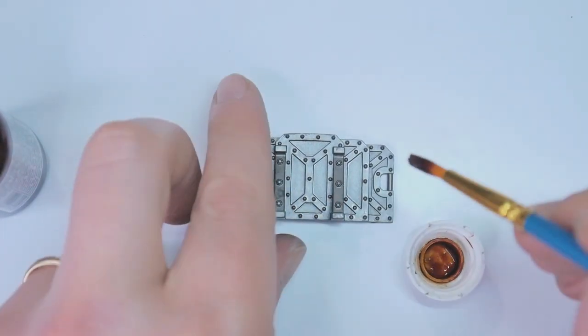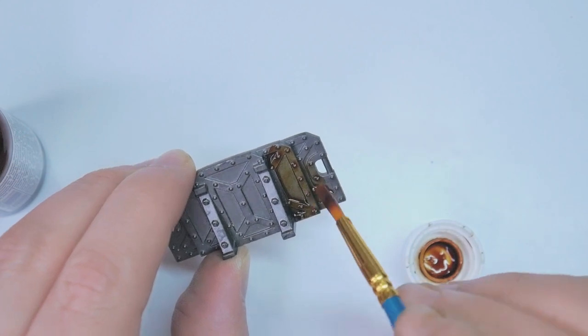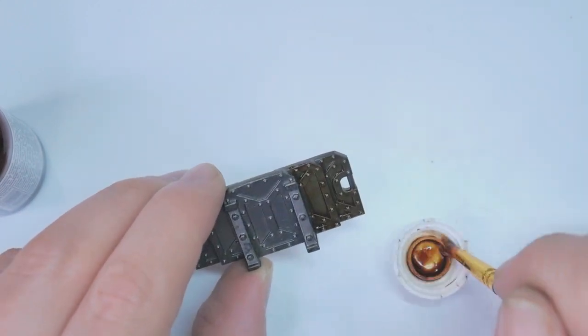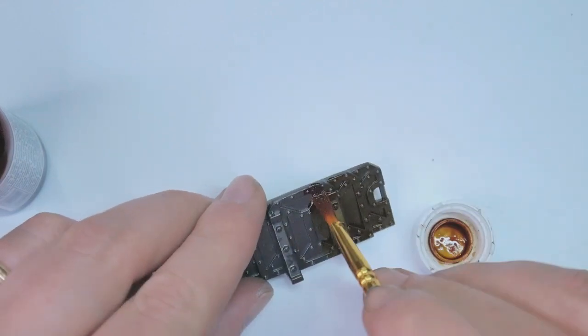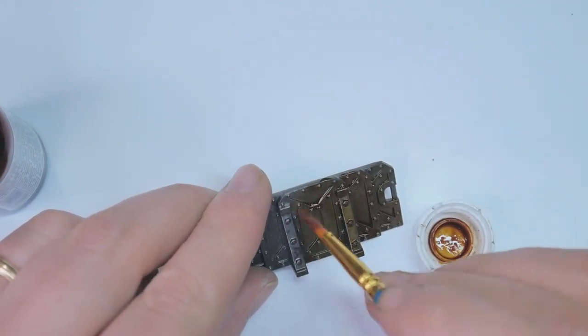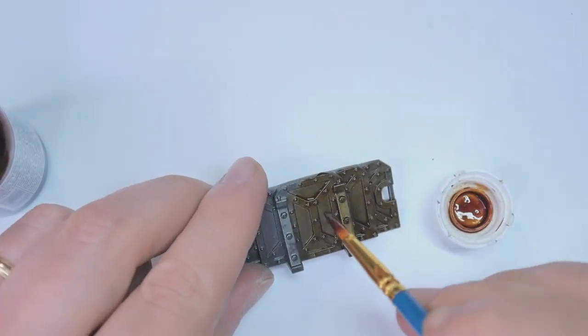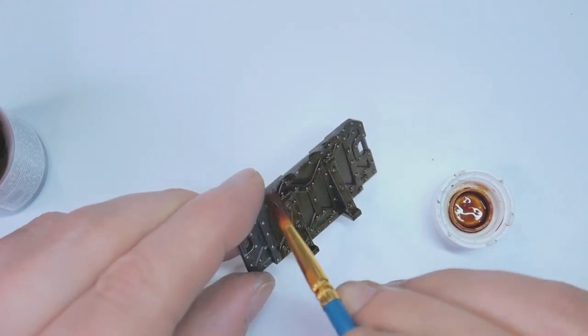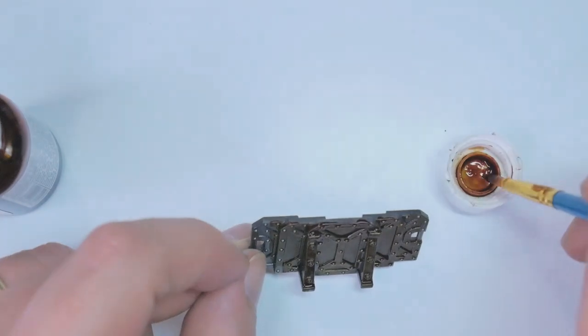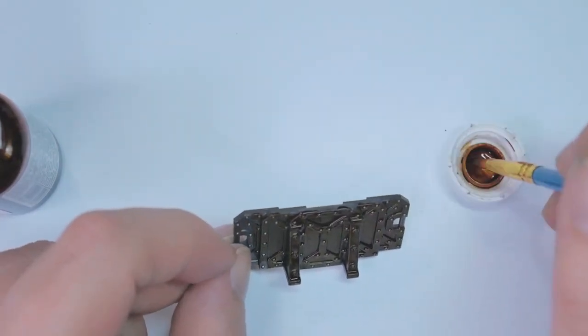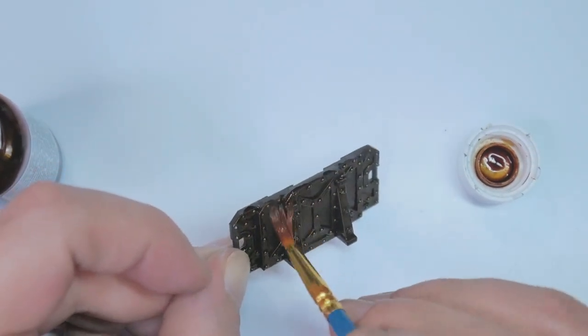Part of the reason I waited so long to try these is that they were pretty hard to come by for a while, but it looks like that issue has been largely resolved. Dirty Down is a line of water-soluble washes that claim to be able to add realistic-looking rust, verdigris, and moss with a very simple process. If you've watched any of my previous hobby videos, you know I'm a fan of making models look battle-worn, and I'm a fan of simple processes, so these should be right up my alley.